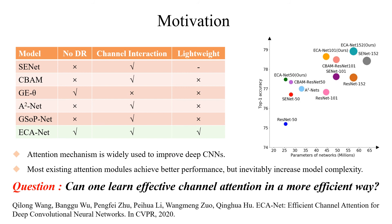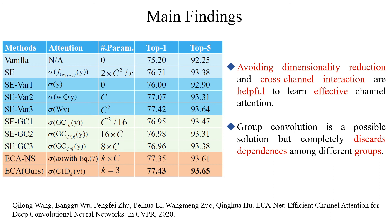In recent years, attention is widely used to improve deep networks. Most of the existing methods have excellent performance but with complex structures. We have found through experiments that avoiding dimensionality reduction and enabling cross-channel interaction are helpful to learn effective channel attention.